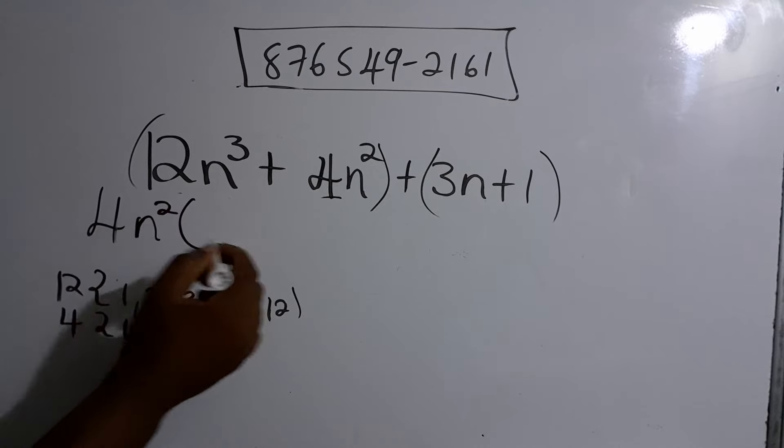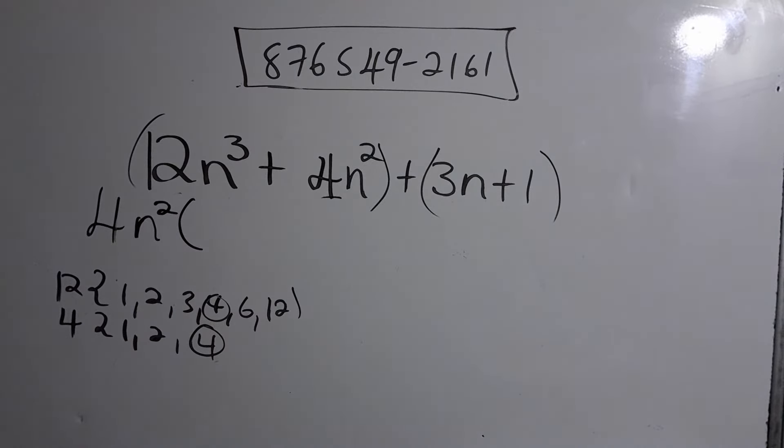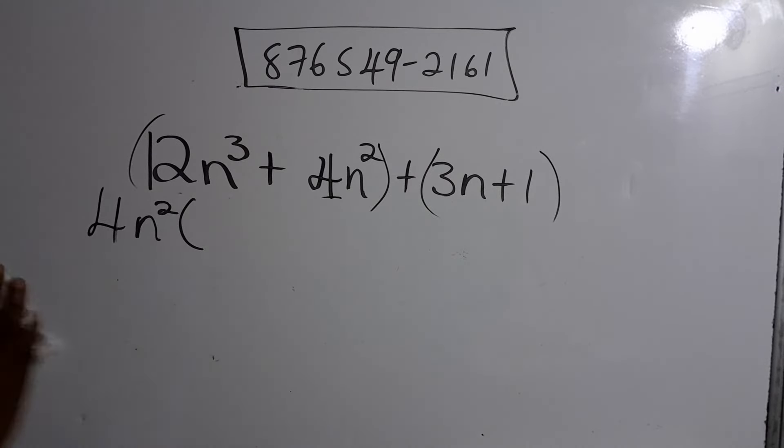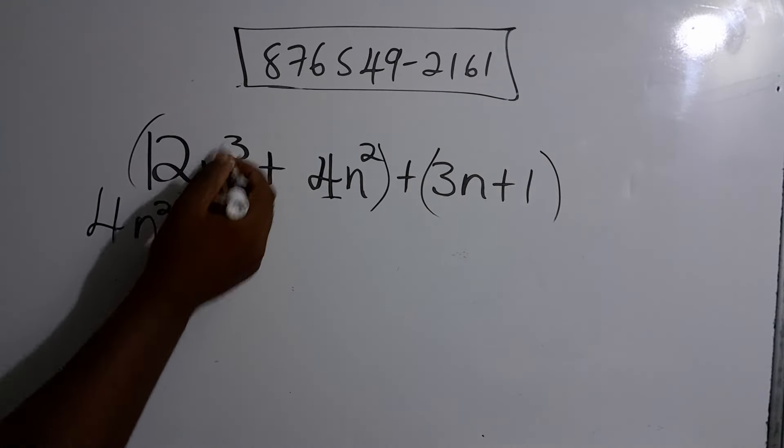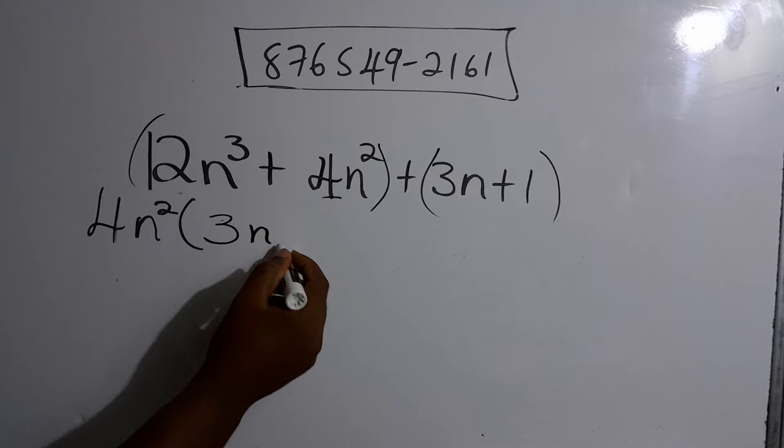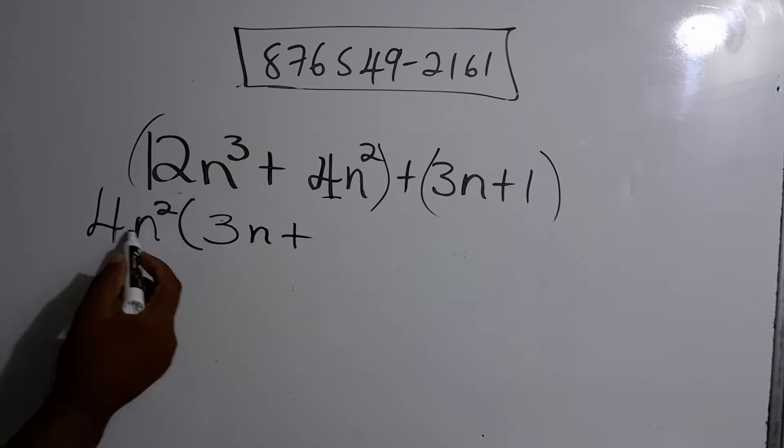And then we can divide, so we have 4n² into 12n³. The 4 would cancel, that leaves 3. 4 into 12 is 3. n² into n³ leaves n. 4n² into itself, that would leave 1.